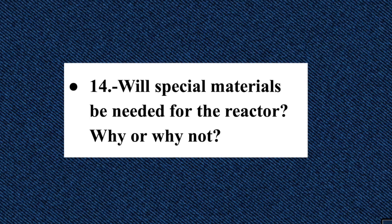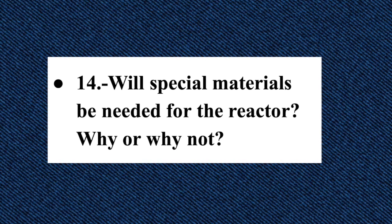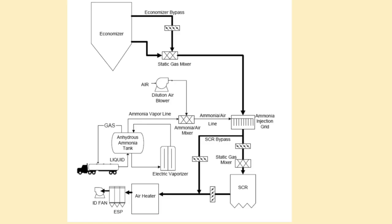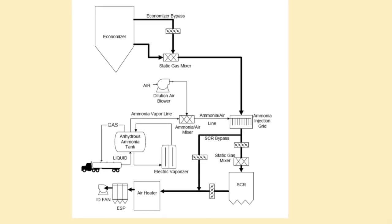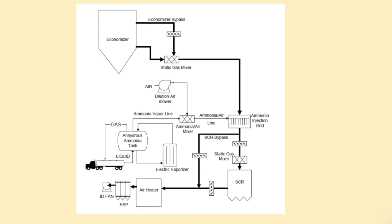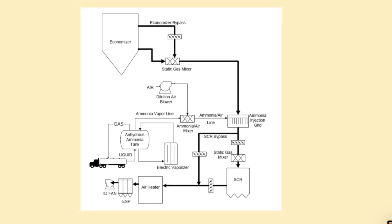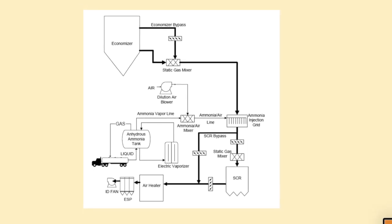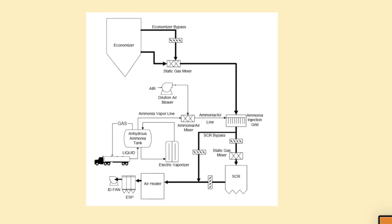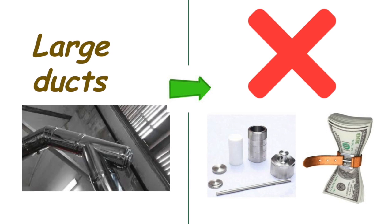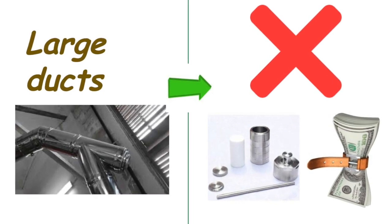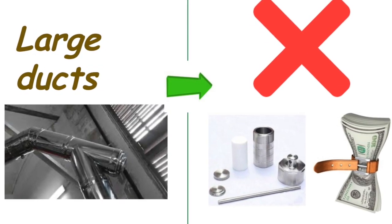Question fourteen: will special materials be needed for the reactor? It depends on the kind of reactor. There are two types: the full SCR and the in-duct SCR. Full SCR stores the catalyst in a separate reactor chamber, where combustion gas is conducted from the economizer to the reactor and then to the air heater entry. A separate reactor allows a large volume of catalyst to be installed in layers. In the in-duct SCR, the ducts are made larger to provide space for the catalyst. This kind of reactor saves duct, reactor chamber, and fan costs.